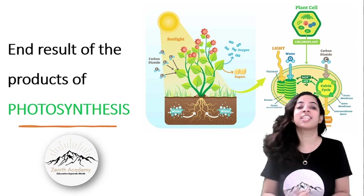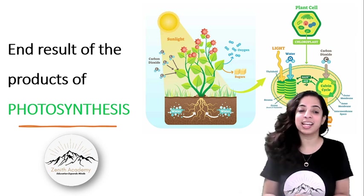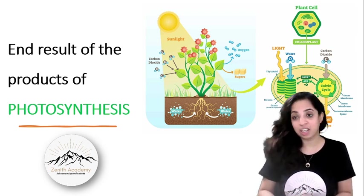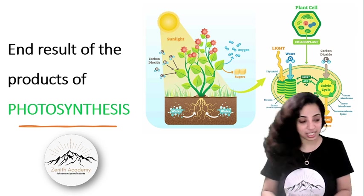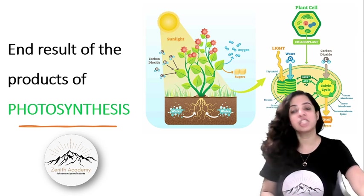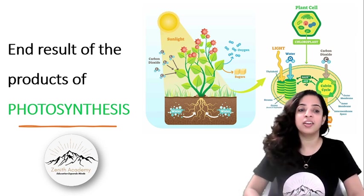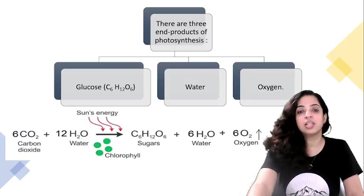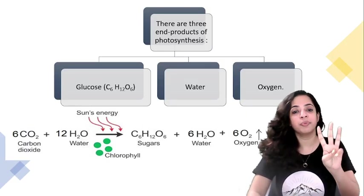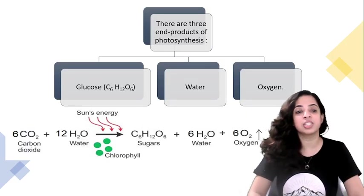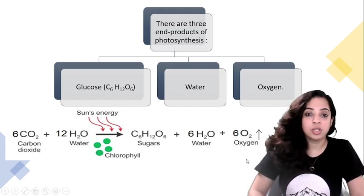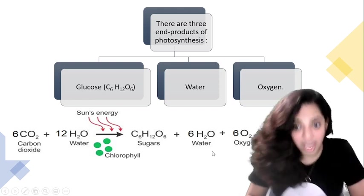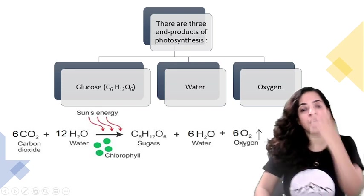Hello, dear students, and welcome to Zenith Academy Online. This is the continuation of the chapter on photosynthesis. In this module, we study the end result and products of photosynthesis. There are three end products of photosynthesis: glucose, water, and oxygen. This reaction is extremely important.